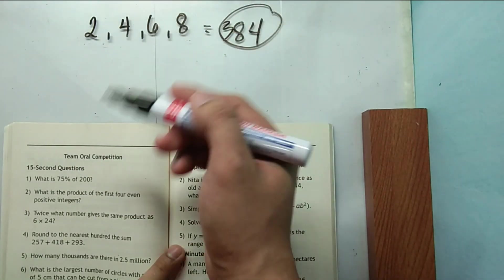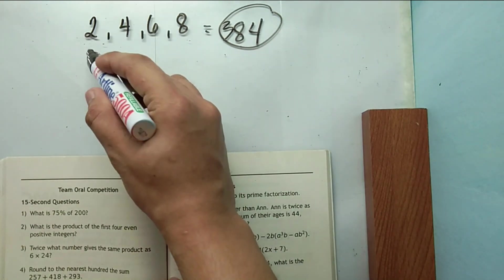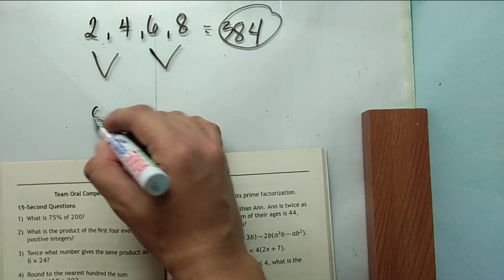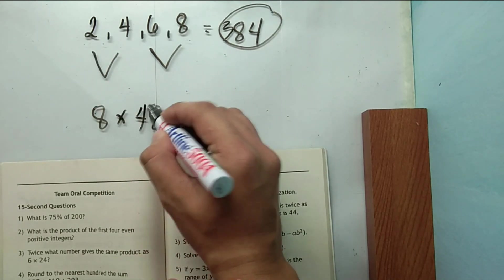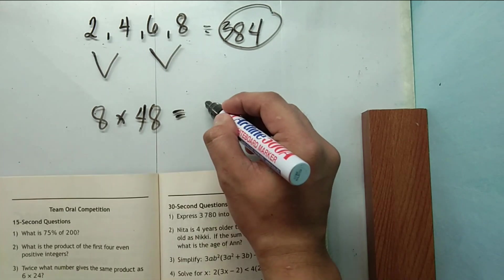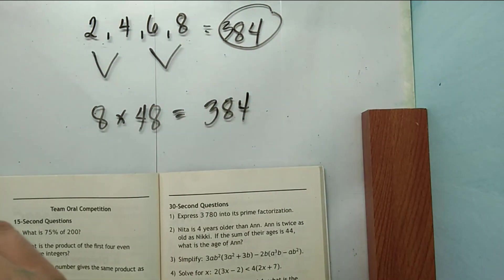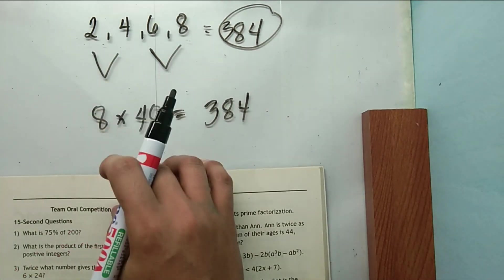Another way is using pairing. Let's say you paired up 2 and 4, 6 and 8. You will just multiply 8 and 48 which is also the same as 384.